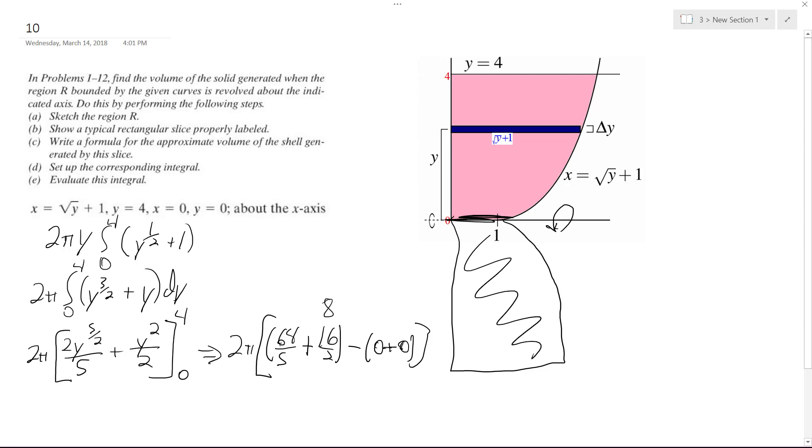And this is actually 8. That's why we had to ultimately end up with 208π over 5, or approximately 130.7.